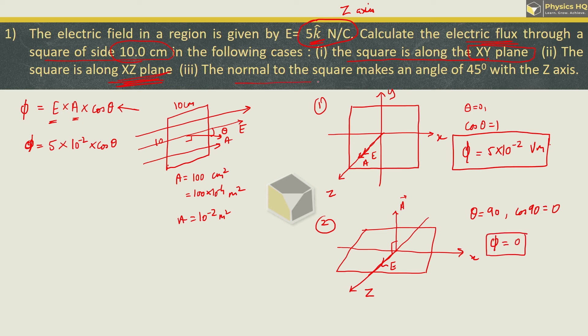Lastly, they are saying that normal to the square, now normal to the square means that area vector is making an angle of 45 degrees with the Z axis. It means electric field also along the Z axis. So, in third case, the area vector and the electric field vector are making an angle of 45 degrees. So, flux will be 5 into 10 raise to minus 2 into cos of 45 will be 1 by root 2, this will be 0.707. When you multiply this, you will find the final flux, 3.535 into 10 raise to minus 2 volt meter.